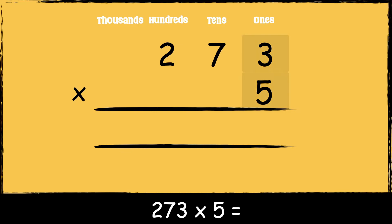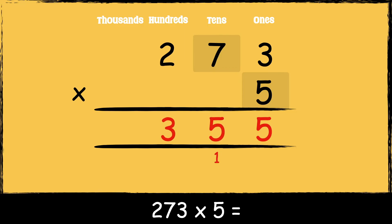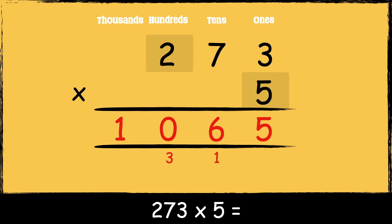First we multiply five by three: five times three is fifteen. We carry the one below in the tens column as it represents one ten. Now we multiply five by seven tens: five times seven is thirty-five, add the one ten gives thirty-six. We carry the three below in the hundreds column. Then five times two hundreds is ten, add three hundreds is thirteen. So the answer is one thousand three hundred and sixty-five.